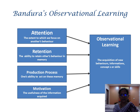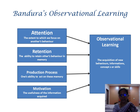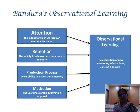An example is Rajinikanth's mannerisms — many youngsters copy his hairstyle or cigarette tricks because they want to receive the same heroism and recognition that the superstar gets from the public. So they take him as a model, copy and imitate him to receive the same kind of recognition. This is observational learning.